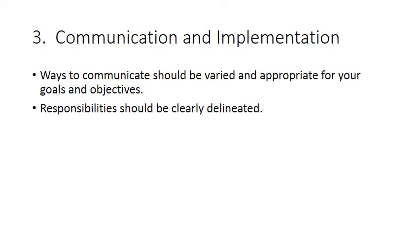The third phase — communication and implementation — is when you actually carry out your plan. The ways to communicate should be varied and appropriate for your goals and objectives. We'll talk later in the course about some of these different ways: websites, Facebook. The advent of technology has given us many more ways beyond, for example, just a printed newsletter. Also, responsibilities should be carefully delineated — you don't want everyone talking to the press because they might give mixed messages. On the other hand, you want a good representation of stakeholders involved in both the development of your communications policies and their implementation.